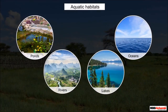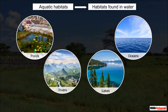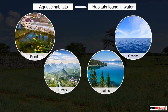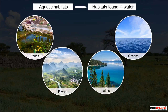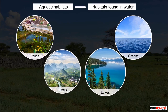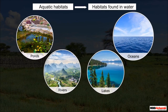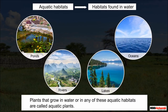Aquatic habitats, on the other hand, are the habitats found in water. These include ponds, rivers, lakes, and oceans. Plants that grow in water or in any of these aquatic habitats are called aquatic plants.